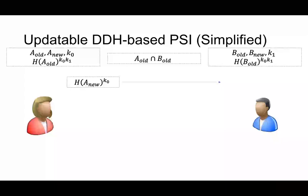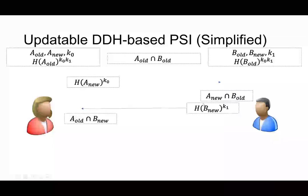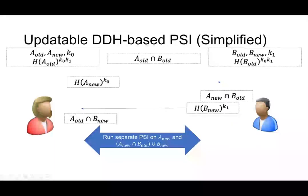In the first message, Alice is going to send A_new raised to K0, and Bob can raise to K1 again, so he know A_new raised to K0 times K1, so he can compare with this old set, and he now know A_new intersects with B_old. And similarly, Alice will know that A_old intersects with B_new.